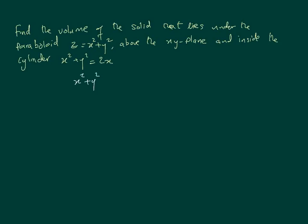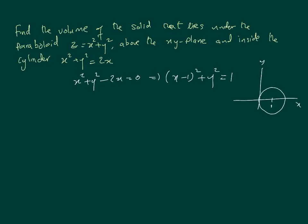The circle in the xy plane is x squared plus y squared minus 2x equals 0. Completing the square gives (x minus 1) squared plus y squared equals 1. So this is a circle with center (1, 0) and radius 1. This is the region D we're integrating over in the xy plane.